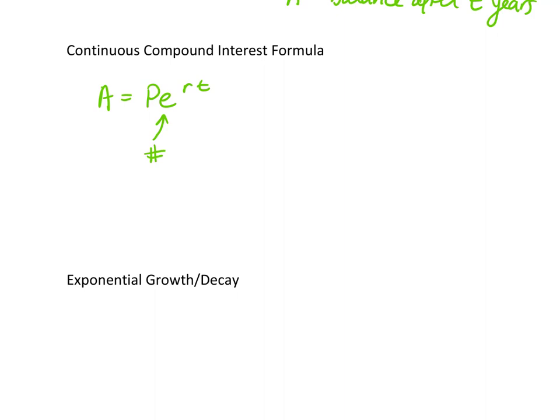Pi is a number, 3.14. e is also a number. It's 2.718. So it has a value attached to it, and it is a button on your calculator, and I will show that to you.